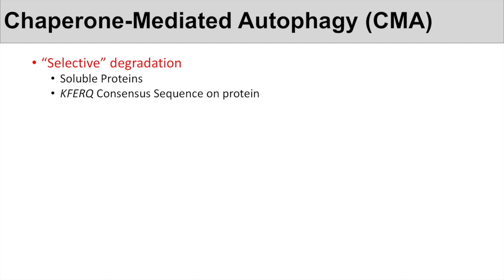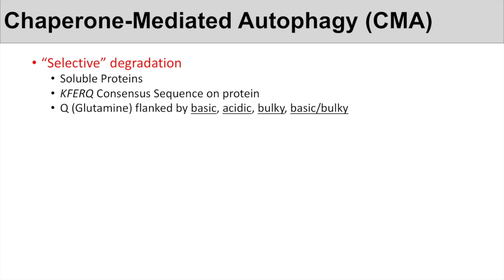The KFERQ consensus sequence is a sequence of amino acids on a protein. It consists of Q, which represents glutamine, and that glutamine residue is flanked by a basic amino acid — R, representing arginine or lysine. Beside that is an acidic amino acid, E, representing glutamic acid or other acidic amino acids. Next is a bulky amino acid, F, such as phenylalanine or tyrosine. Finally, K represents a basic or bulky amino acid, such as arginine, lysine, or phenylalanine.